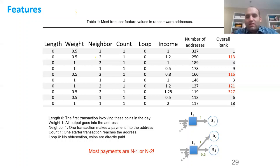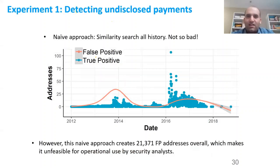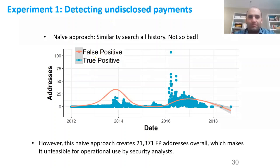Most ransomware payments are N-to-1 or N-to-2 payments: the company collects Bitcoins from multiple addresses and makes a payment to one address, which is the ransomware address. If you do perfect pattern matching for these six features, you catch a lot of true positives, but the problem is that you also catch too many false positives — 21,000 in this case — which is not ideal. A security analyst needs to review these suspicious addresses, so the idea is to reduce the number of false positives, and TDA mapper helps here.